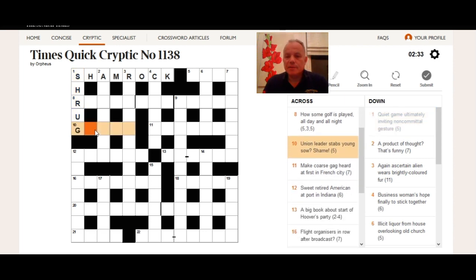Ten across begins with a G. Union leader stabs young sow. Shame. Wow. I mean, this takes us a bit deeper into crossword stuff. There's a word for a young sow that I think you're really only going to know if you solve crosswords or possibly if you're in a very rural area living on a farm where they happen to use this word. And that's a bit less likely to me.